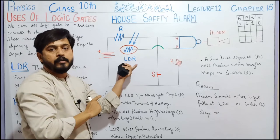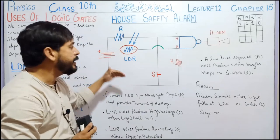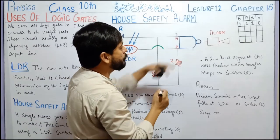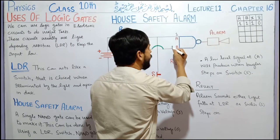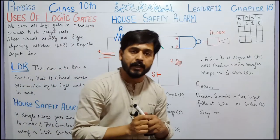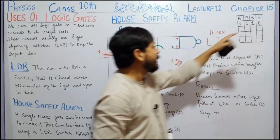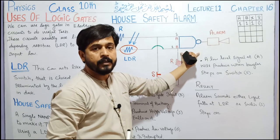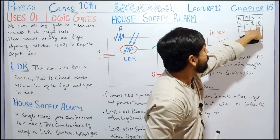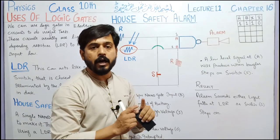Since the LDR is a Light Dependent Resistance, when light falls on it, current passes through it, and that current comes to point B. So what is the value at point B? It is 1. Now, since we have A=1 and B=1, and applying NAND — which is AND inverted — the AND output is 1, and after NOT operation it becomes 0. This means the alarm will NOT sound — the alarm is off.